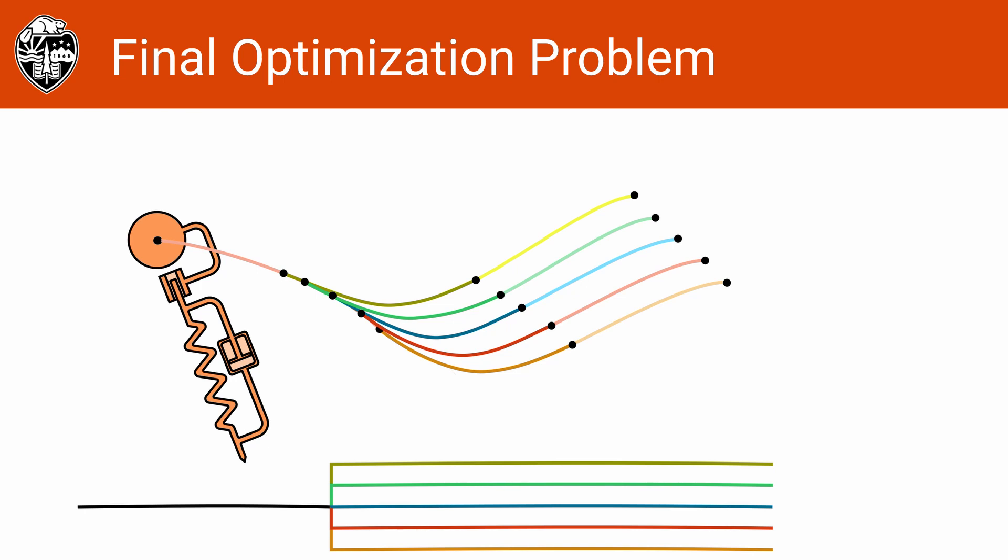There is a really interesting discussion to have here about if this is the correct definition of rejecting ground height, and if you have a strong opinion about this and would like to discuss it, please message me. As a comparison, we will also optimize a flat ground scenario for integrated actuator acceleration squared.